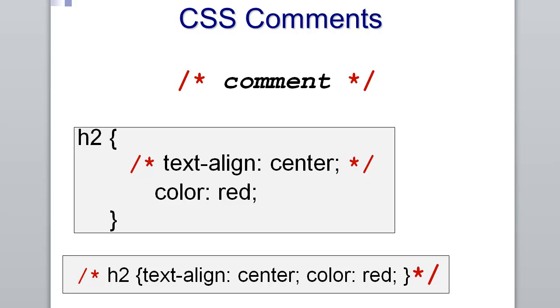CSS comments: if you wanted to comment out your code for whatever reasons, for testing or for making notations, it is the forward slash asterisk for the opening, asterisk forward slash for the closing. And that can be a single line or multi-line.